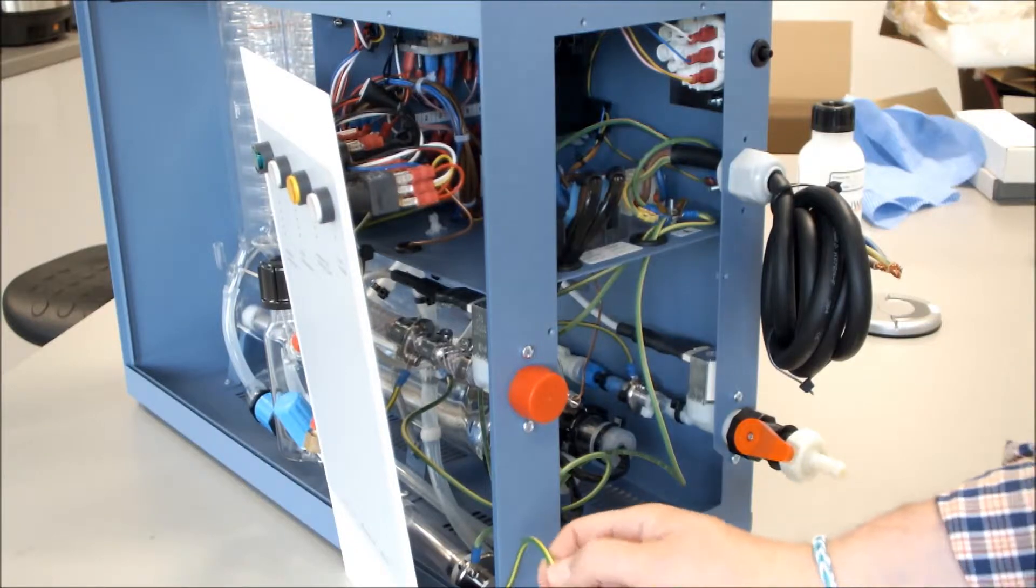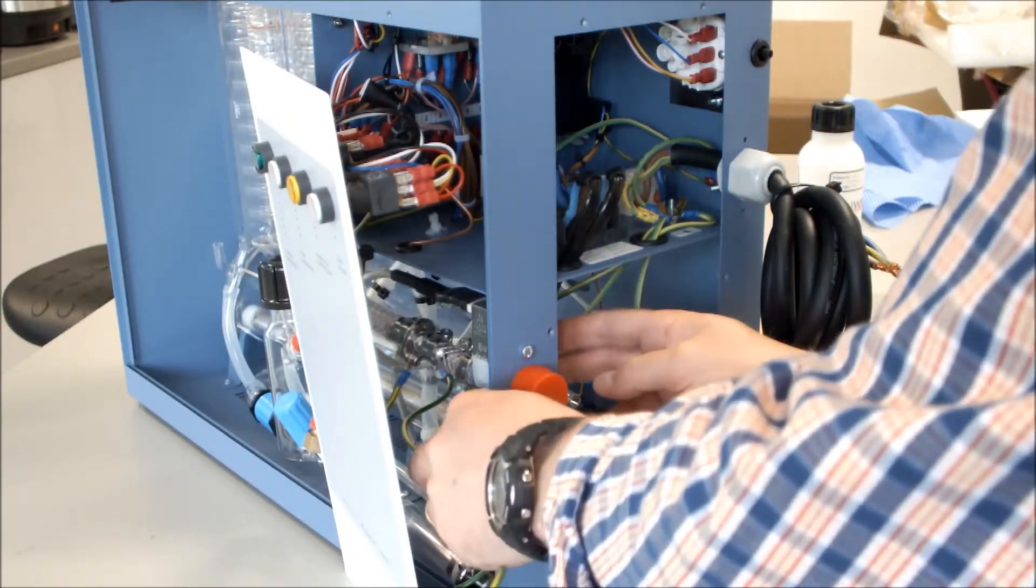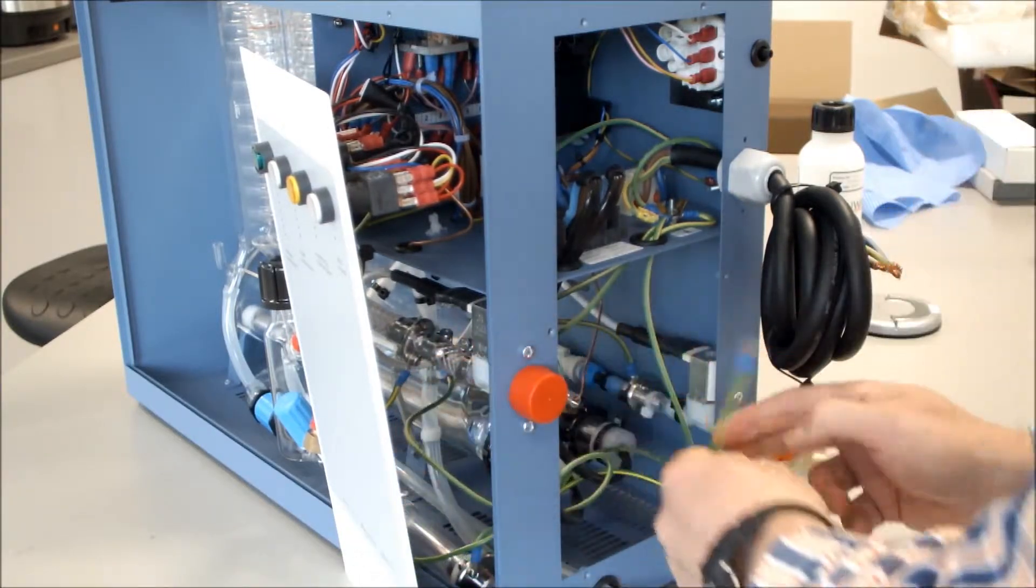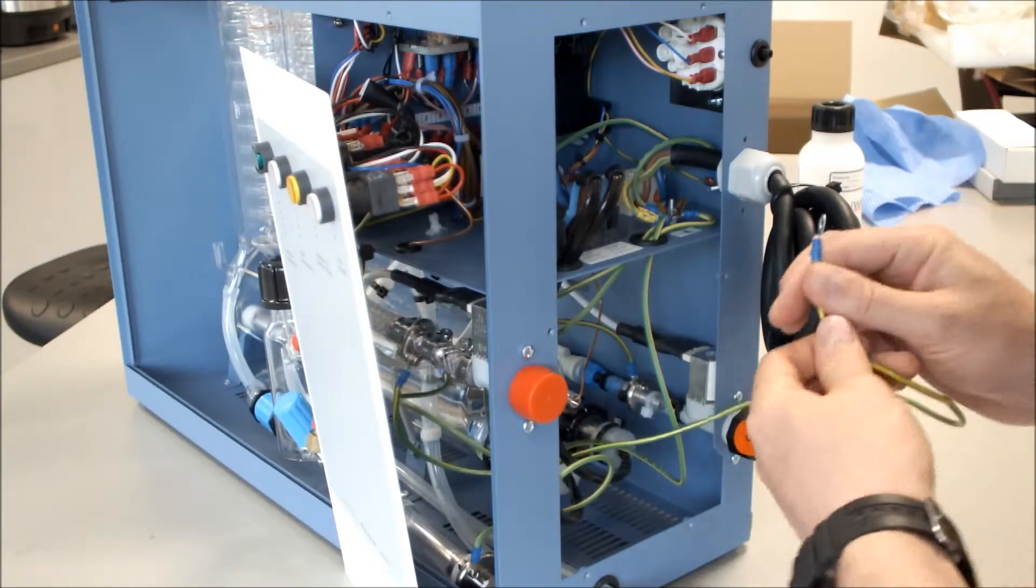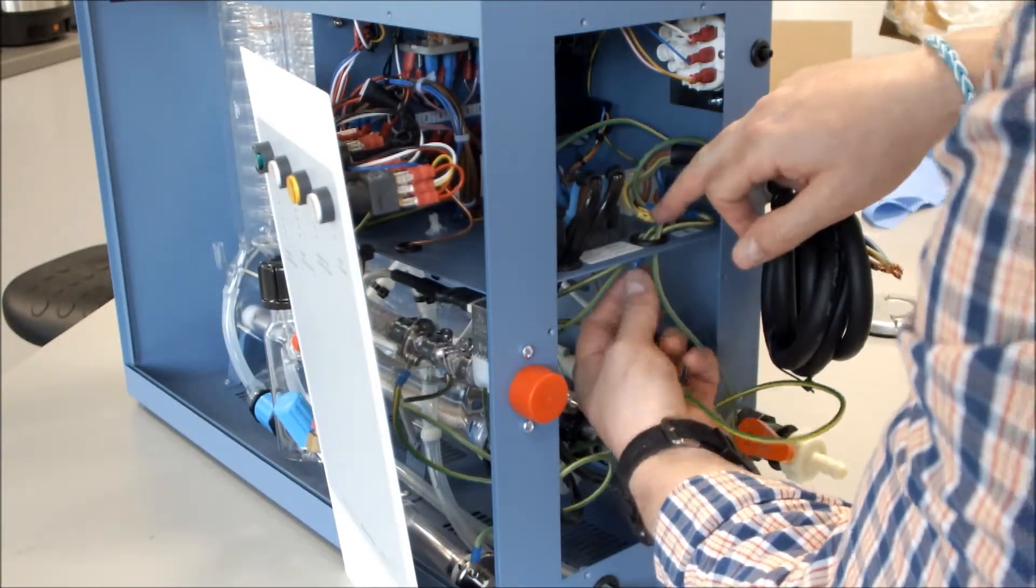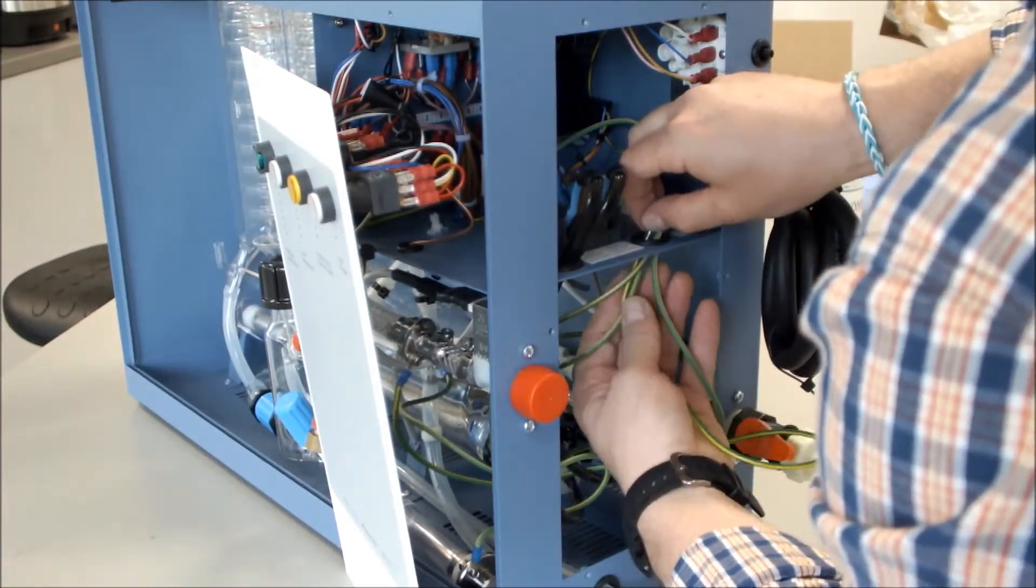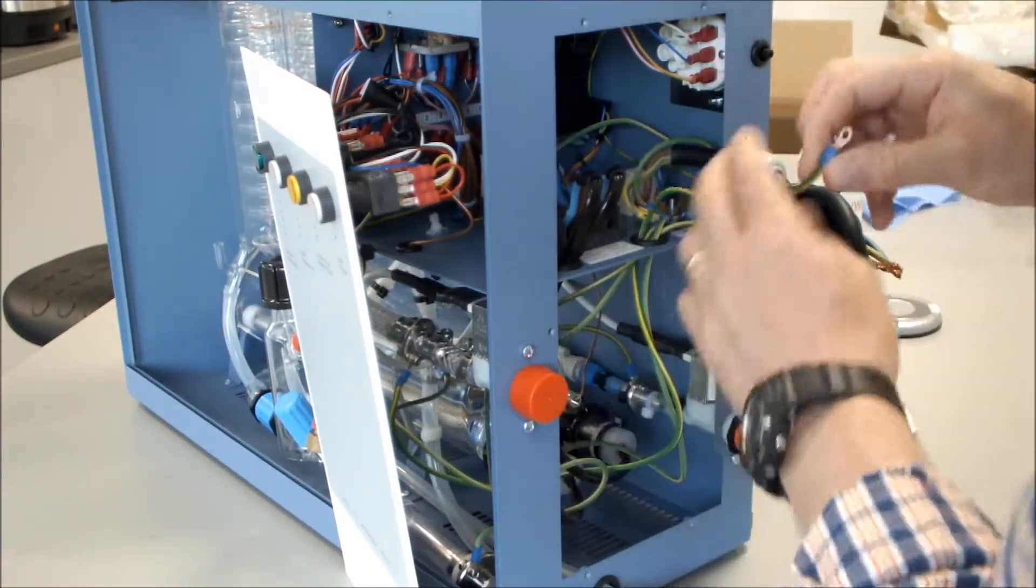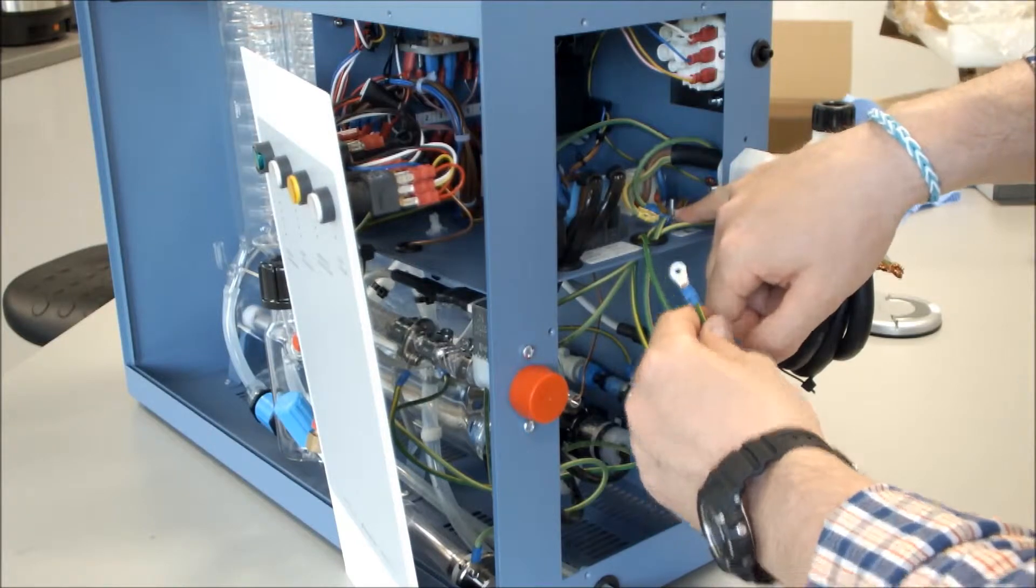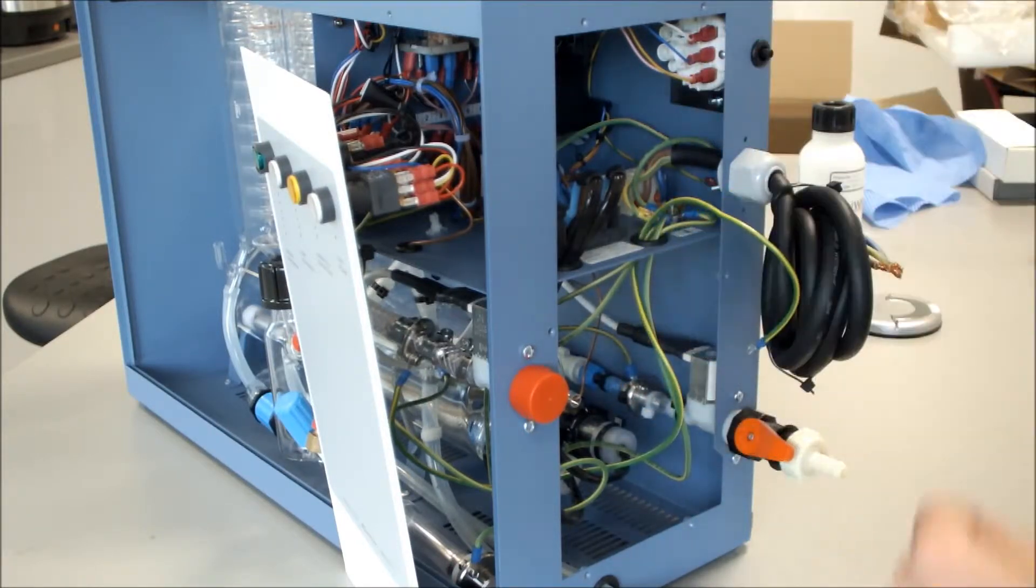When we've connected our deionised pipe, we then need to take the earth, like so, up through the hole in the chassis there. You then need to disconnect the nut on there, place that on, and tighten the nut up.